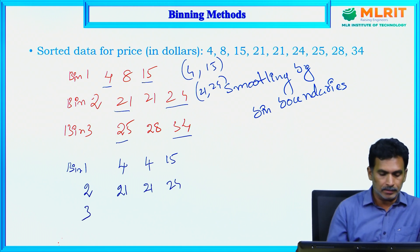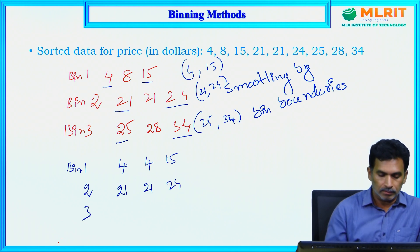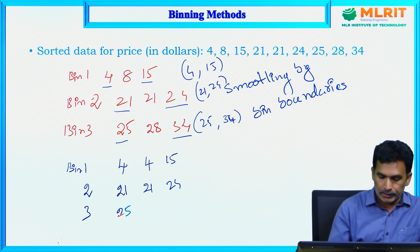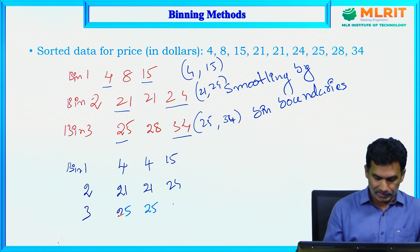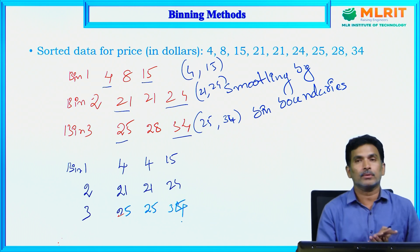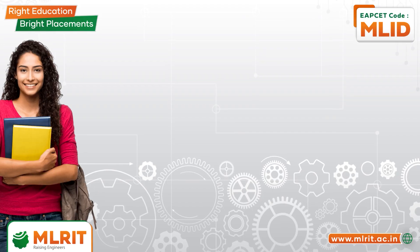Similarly, the same approach is applied to bin 3. Here the minimum boundary is 25 and maximum is 34. The value 25 stays as 25, both 28 values are closer to 25 so they are replaced by 25, and 34 is replaced by 34. These are the different binning methods.